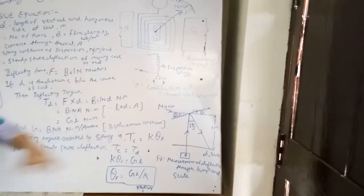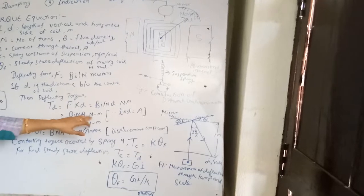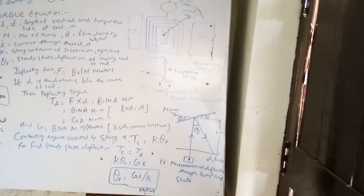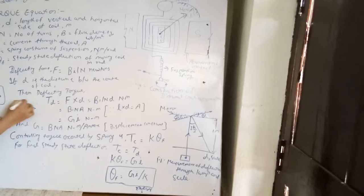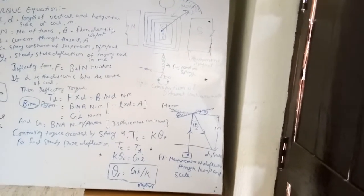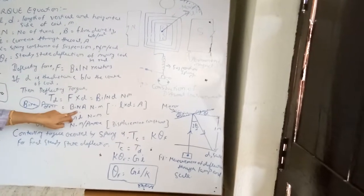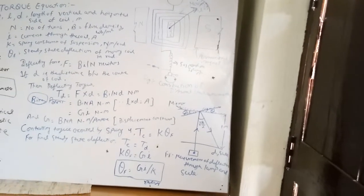Now it is given by B·I·N·A. You can remember it as BINA. The deflecting torque is given by BINA: B is the flux density, I is the current, N is the number of turns, and A is the area of the coil.